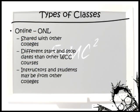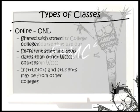There are many types of online classes. The first type, ONLs, are online classes we share with other colleges through the WAOL class system. These classes have different start and stop dates than other WCC courses, and instructors and students may be from other colleges.